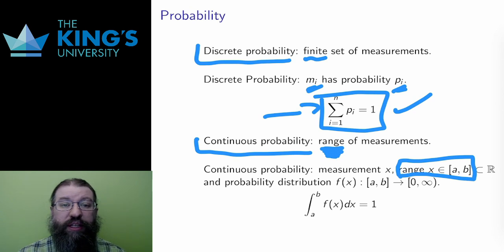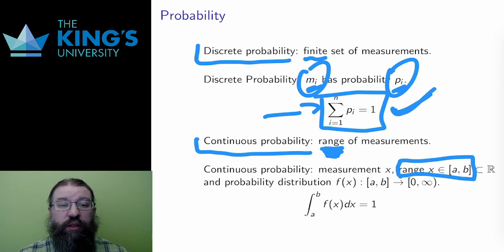For a discrete probability, each measurement was assigned a probability, and the probabilities added up to 1. For continuous probability, this system doesn't work. Instead, there is a function that captures the probability. The domain of the function is the measurement interval, a to b. The output of the function must be positive, since negative probability doesn't make sense.